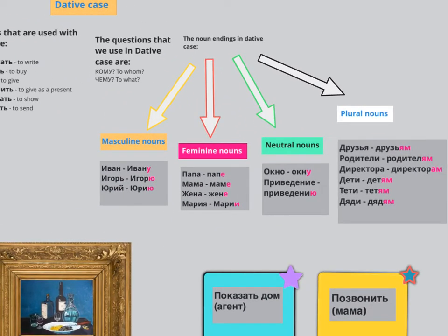All you need to remember is that masculine nouns are similar to neutral nouns. This one is just ЙЕ, and the plural is АМ and ЯМ. It might be a lot to remember, but we'll try. So let's have a look at my timetable.